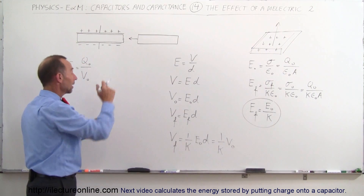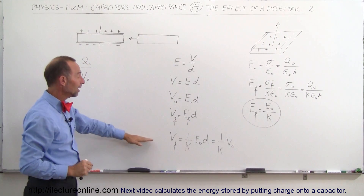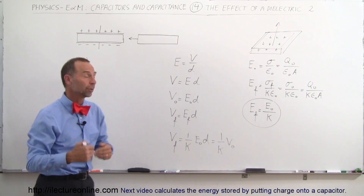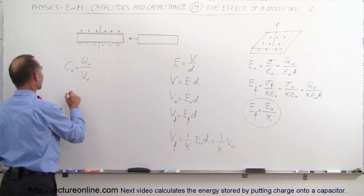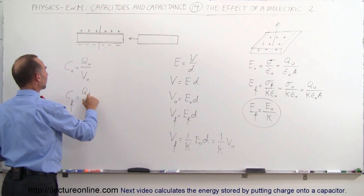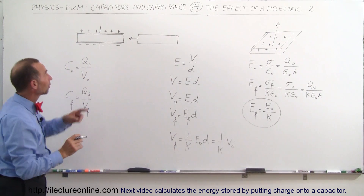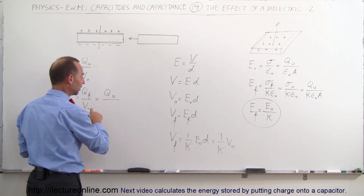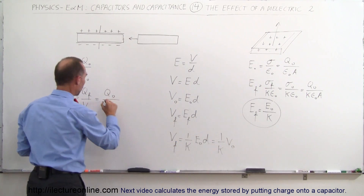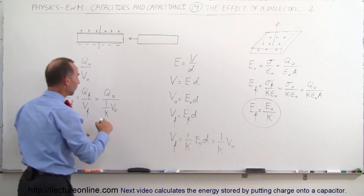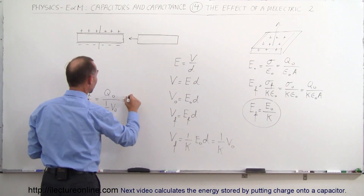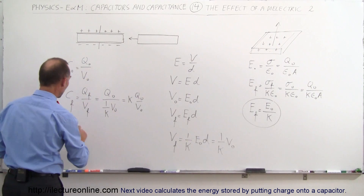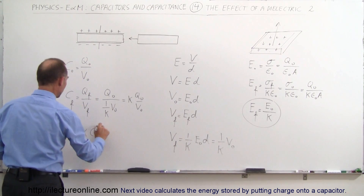By putting a dielectric in there when the capacitor is not connected to the battery, the potential across the plates drops by a factor of k. If k is 2 you have half the potential difference; if k is 3 you'll have one-third. Now for the final capacitance: C_final = Q_final / V_final. Since the charge has nowhere to go, Q_final = Q_initial. And since V_final = (1/k)·V₀, dividing by 1/k is the same as multiplying by k, giving C_final = k · (Q_initial/V_initial) = k · C₀.